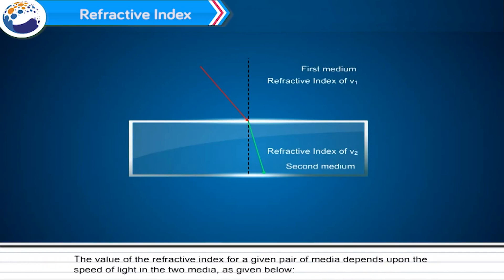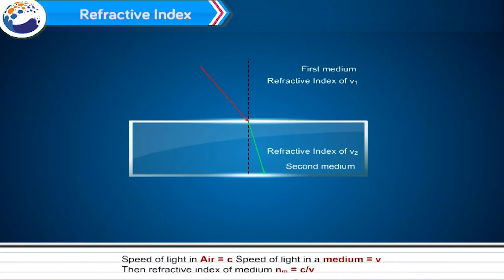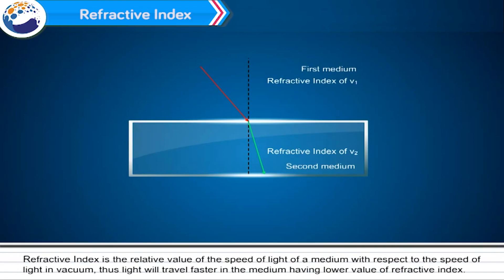The value of the refractive index for a given pair of media depends upon the speed of light in the two media. The speed of light in air equals c; the speed of light in a medium equals v; then the refractive index of the medium nm equals c divided by v. Refractive index is the relative value of the speed of light in a medium with respect to the speed of light in vacuum. Thus, light will travel faster in the medium having a lower value of refractive index.